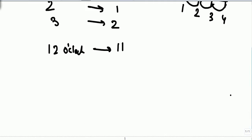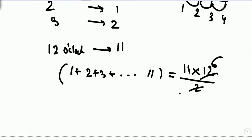So if we sum up 1 plus 2 plus 3 up to 11, summation is n into n plus 1 by 2, that is 66 intervals.